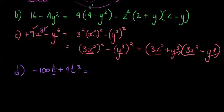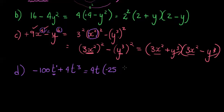Something can only be written as a square if it has an even exponent. For example, x to the power of 4 divided by 2 gives x squared, and y to the power of 6 divided by 2 gives y cubed. But here the exponents 1 and 3 are odd. What I can do is take out 4t as a common factor. That leaves me with negative 25 — no more t since I took one out — plus t squared.